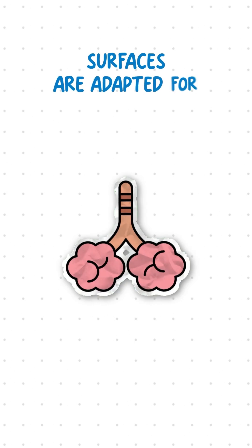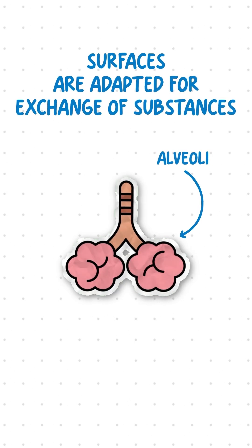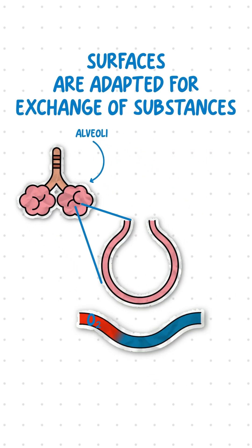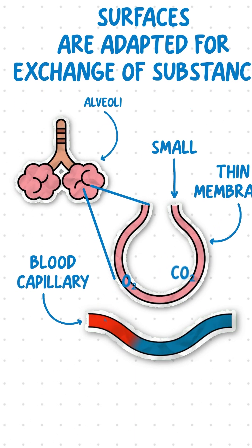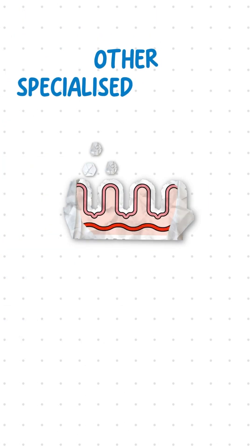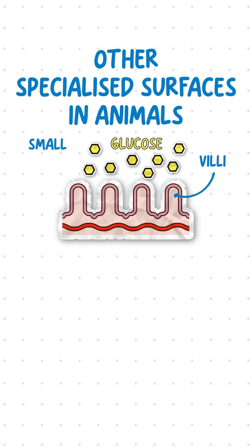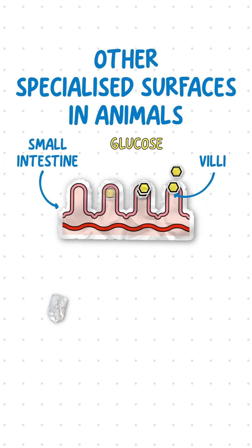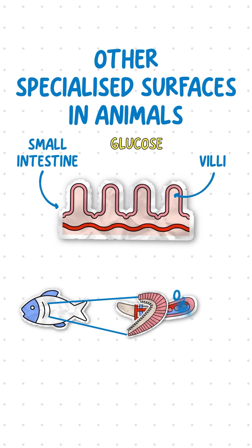These surfaces are adapted for exchange of substances. For example, alveoli are adapted for gas exchange by being small, having thin membranes, and being surrounded by capillaries, all of which increase diffusion rate. Other specialized surfaces include villi in the small intestines for glucose absorption and gills in fish for oxygen uptake.